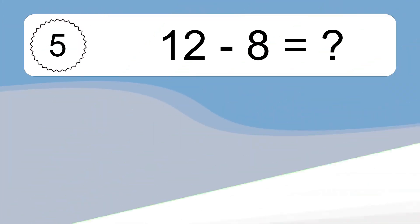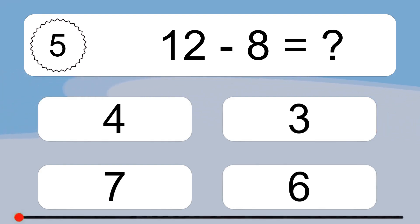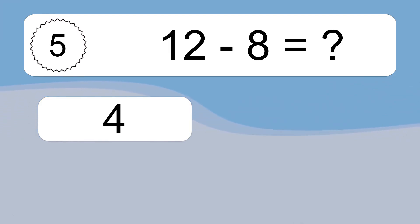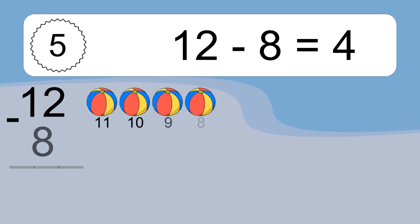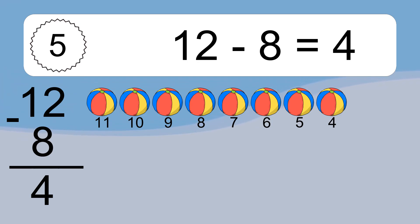12 minus 8 equals what? 12 minus 8 equals 4. Let's count it: 11, 10, 9, 8, 7, 6, 5, 4.